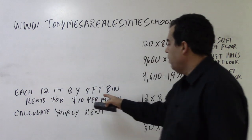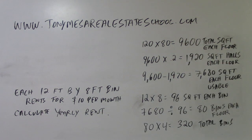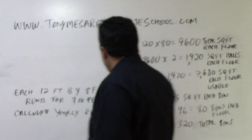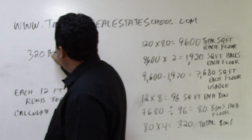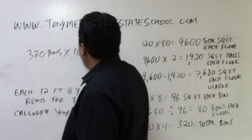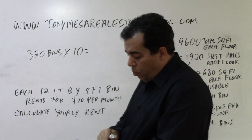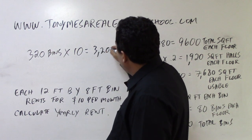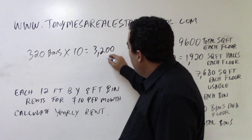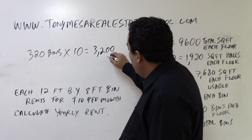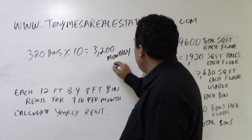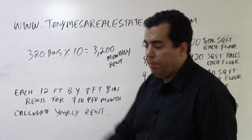Each one of these bins rents for $10 per month, and they are asking to calculate the yearly rent. We have 320 bins, and each one rents for $10 per month. So 320 times 10 gives us $3,200. That is how much income you'll have on a monthly basis — the total you're going to be able to rent them out for.